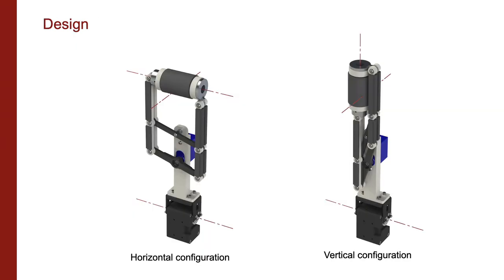The grasper assembly consists of three kinematically similar fingers, each consisting of three actuated degrees of freedom.